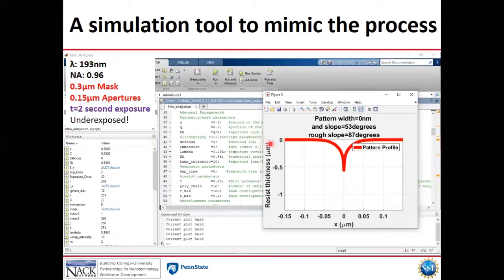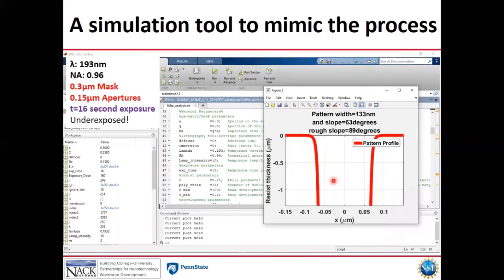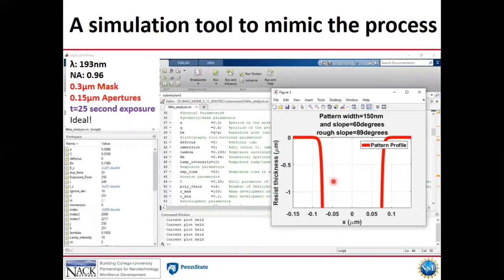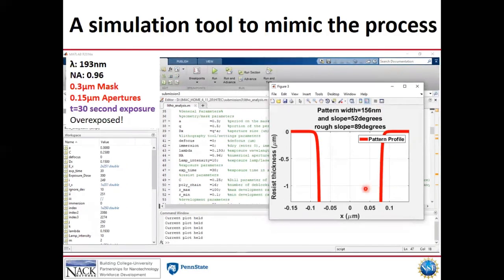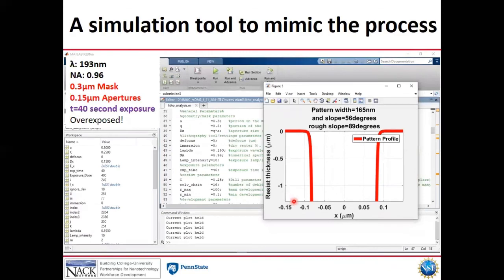Finally, students can also vary exposure time. 2 seconds gives us underexposure. 6 seconds, 16 seconds, 25 seconds is the ideal. 150 nanometer apertures have been transferred with the same width. Now starting to overexpose 30 seconds, eating away from the side walls, 40 seconds.